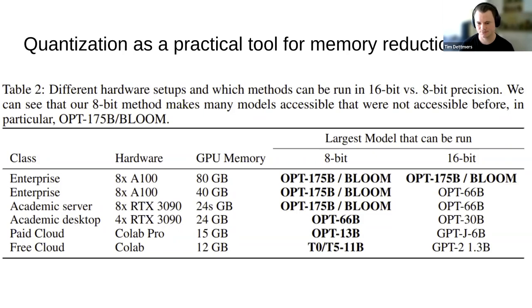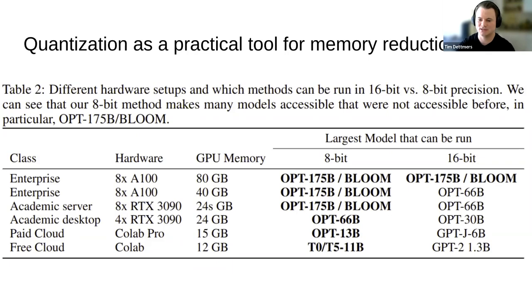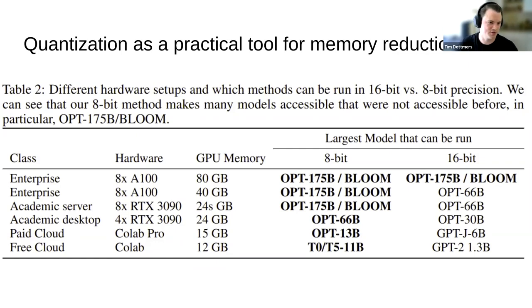Here's a table of memory footprints for different hardware setups and the largest model that can fit. On a paid cloud you can fit 13 billion parameters. On an academic desktop with the best consumer GPUs, you can fit OPT 66 billion or LLaMA 65 billion — so you no longer need a server, just a desktop.